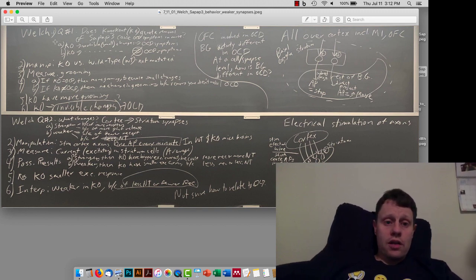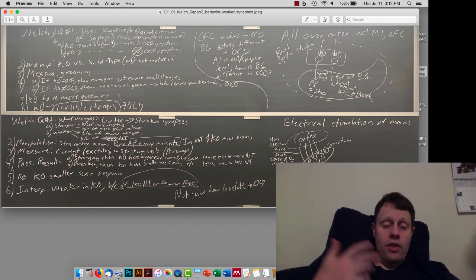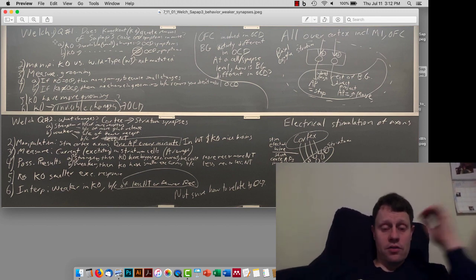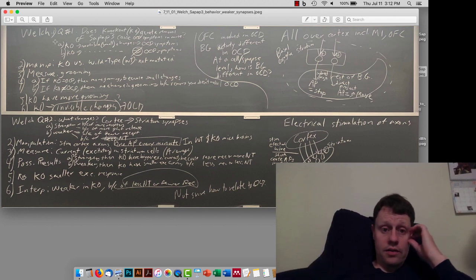In the Welch study, we also reviewed the first question, which is, are they able to generate a mouse that does create and mimic some of the behaviors, model is the word, modeling some of the behaviors of obsessive-compulsive disorder.